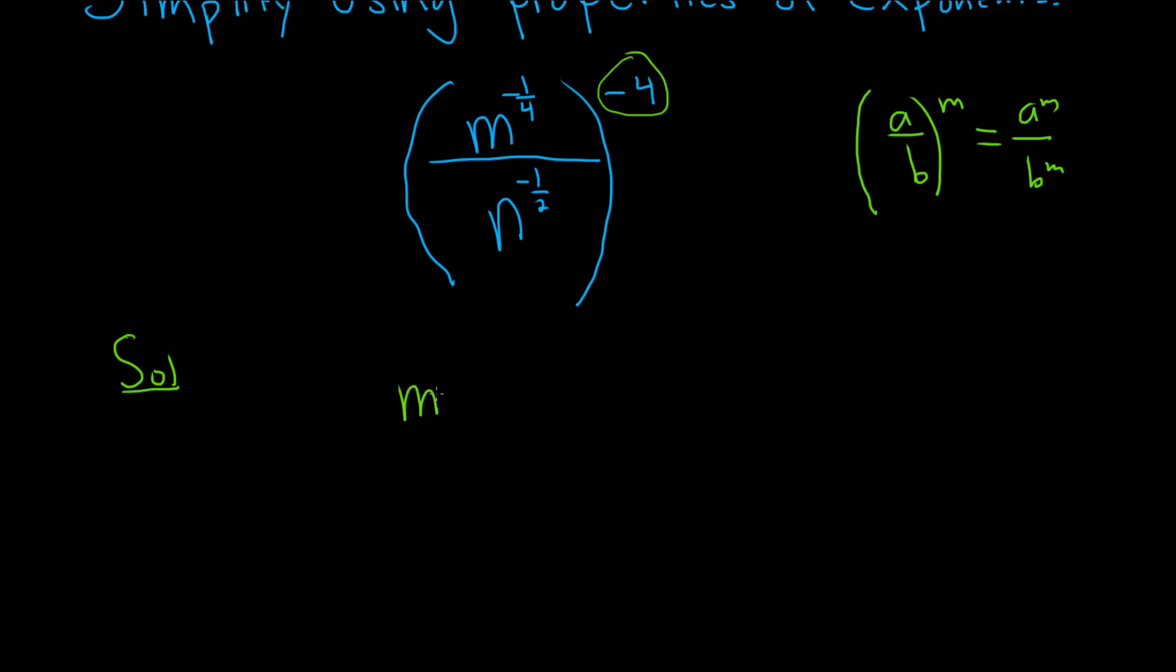So we'll raise the top piece, so m to the negative one-fourth. We're going to raise that to the negative four. And then we'll do the same for the bottom piece. So n to the negative one-half, and that's also going to be to the negative four. Okay, you just do that to each piece and all is good.